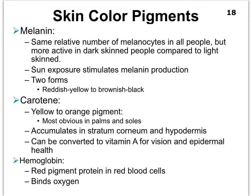Now let's look at the three major color pigments found in the skin. Melanin, produced by melanocytes, actually comes in two forms: one is more reddish-yellow, while the other is more brownish-black. We find melanin not only in the skin but also in our hair and eyes. The more we are in the sun, the darker we tend to get, as sun triggers more activity in melanocytes. As humans, we all have pretty much the same number of melanocytes — the difference between dark-skinned and light-skinned people is that in dark-skinned people the melanocytes are much more active, and this is all genetically determined.